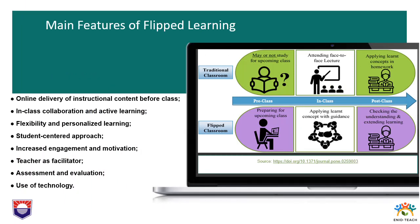Some of the main features of flipped learning that distinguish it from traditional education models are: online delivery of instructional content, where content such as video lectures or readings is delivered online to students before they come to class; and in-class collaboration and active learning, where classroom time is used for collaborative and interactive activities such as group discussions, problem-solving exercises and hands-on projects.